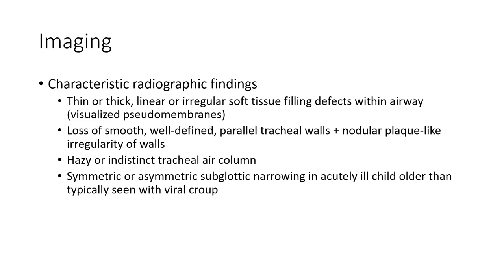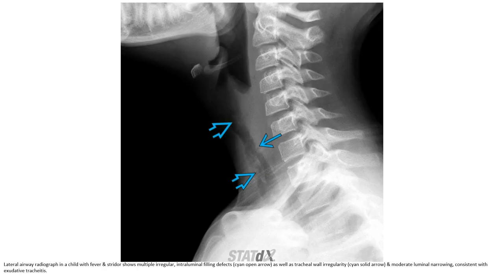Additional findings include irregular structure in the air column, asymmetric subglottic narrowing, and in acute cases multiple irregular intraluminal filling defects as well as tracheal irregularity and moderate luminal narrowing, consistent with exudative tracheitis.